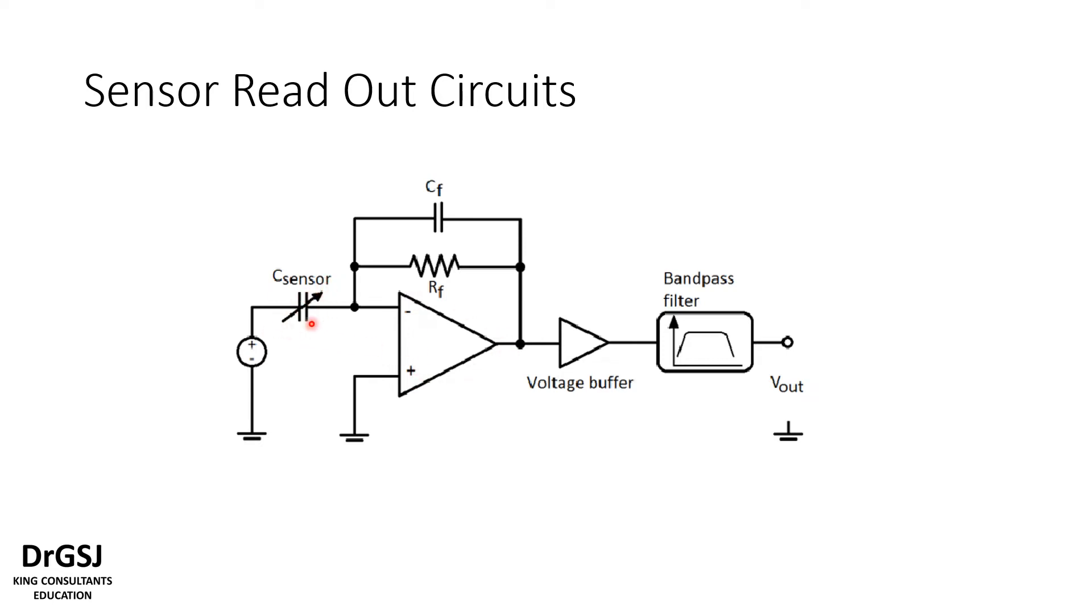There is a resistor feedback present to give a DC path for the output. This output is buffered, or the voltage output is buffered.